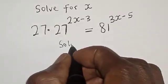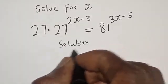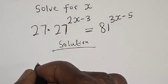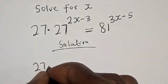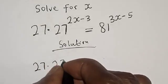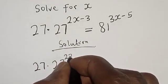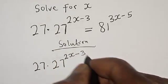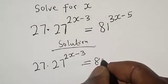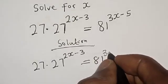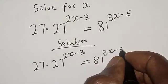Solution. We have the given equation: 27 multiplied by 27 raised to power 2x minus 3 is equal to 81 raised to power 3x minus 5.